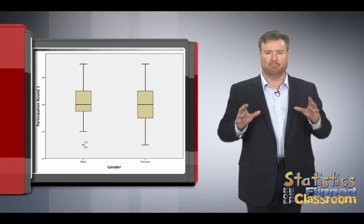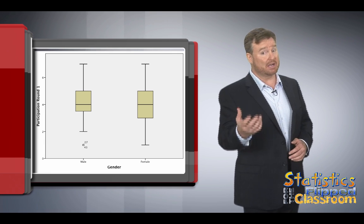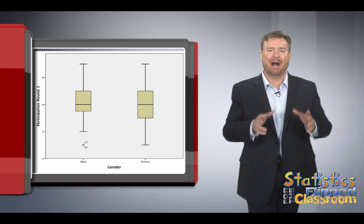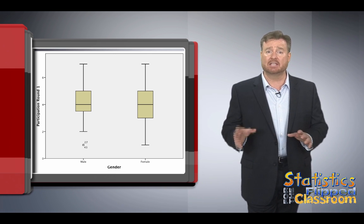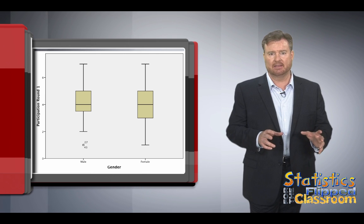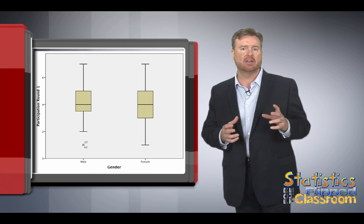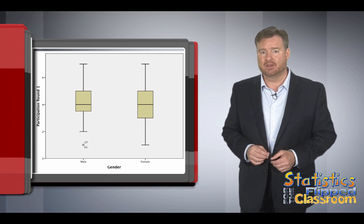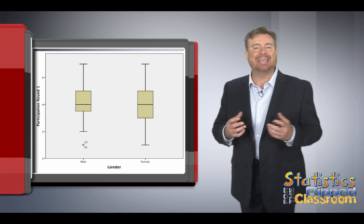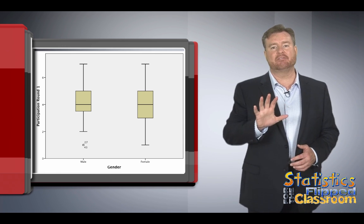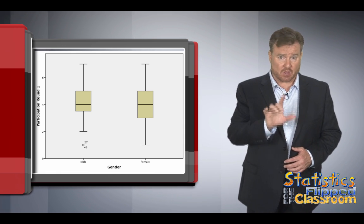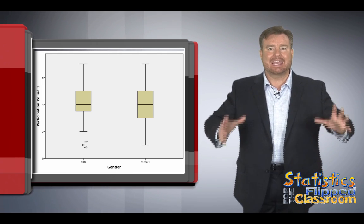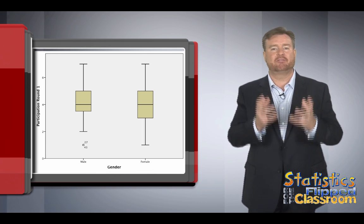The best description I've ever heard for box plots, also known as the box and whisker diagram, is elegant simplicity. The box plot serves up a great deal of information about both the center and the spread of the data, allowing us to identify skewness and outliers in a form that is both easy to interpret and easy to compare to other distributions. It is the graphical equivalent of the five-number summary. All of that in one simple graph, made of just a few lines.